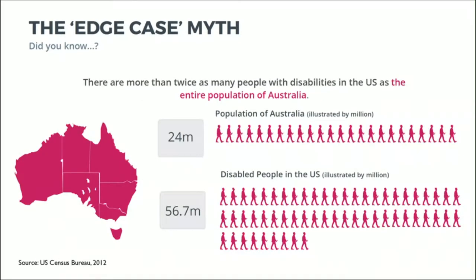Framing this another way, there are more than twice as many people with a disability in the United States as the entire population of Australia. It's 24 million to 56.7 million. So it's a pretty significant amount of people that we're talking about impacting.